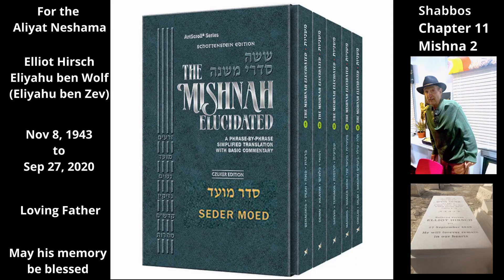Chapter 11, Mishnah 2. This Mishnah elaborates on the view of the sages in the preceding Mishnah. What is the case of the preceding Mishnah in which a person transfers an item from one private domain to another private domain through a public domain and is exempt?